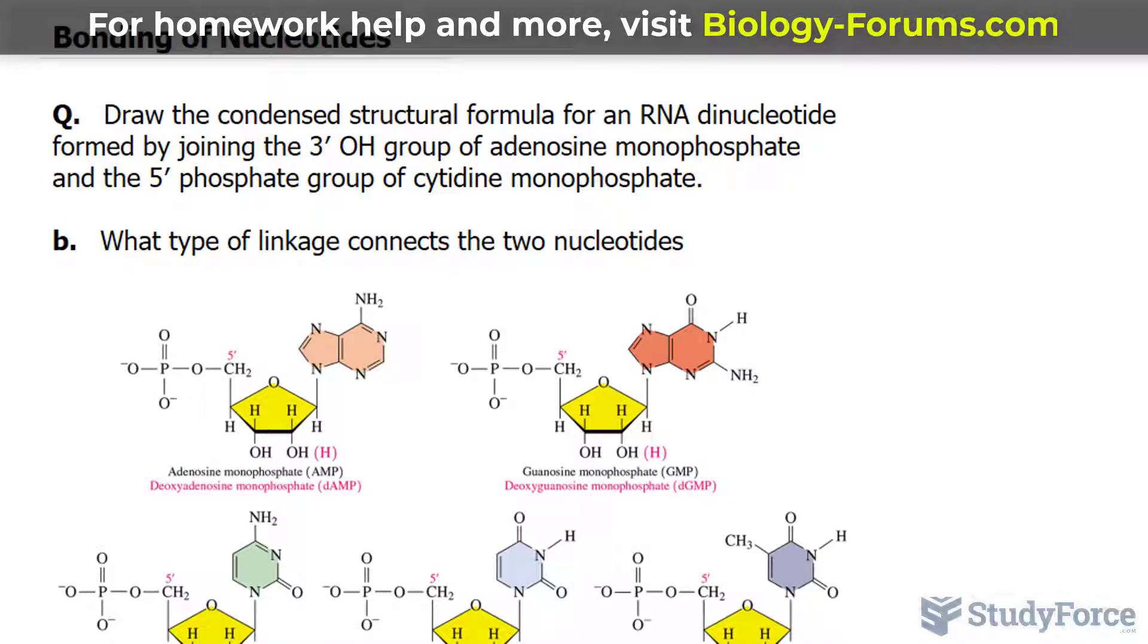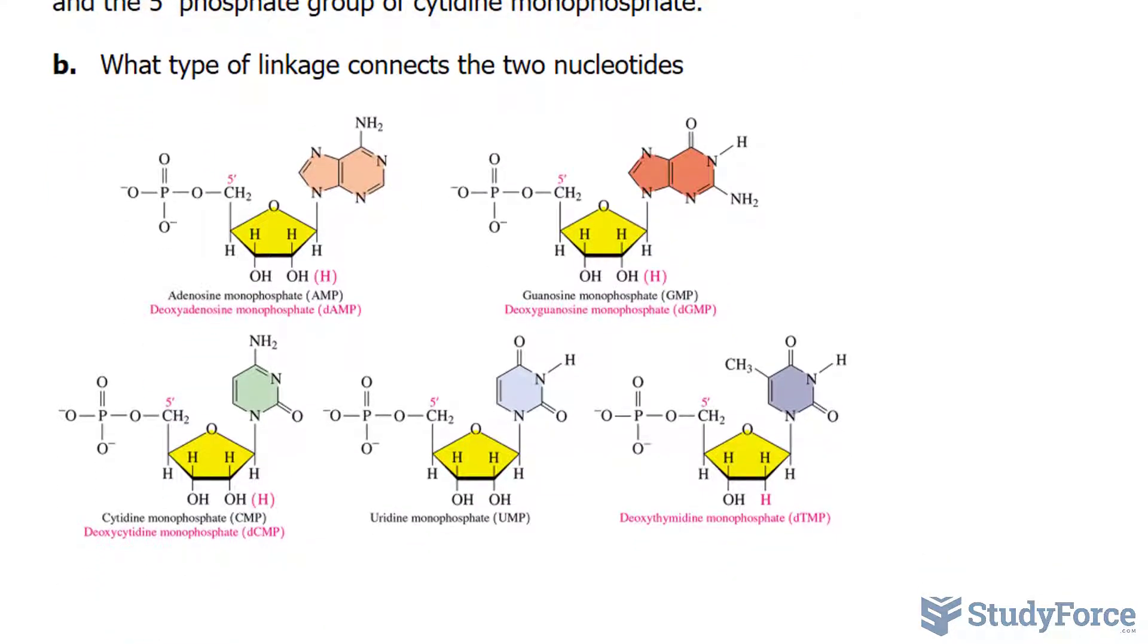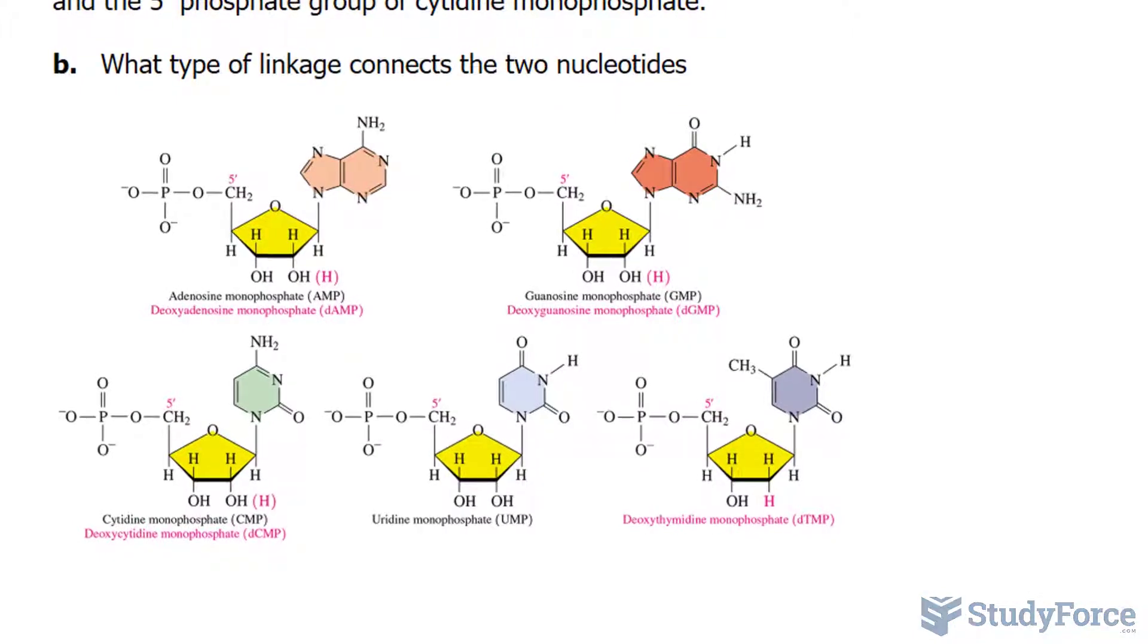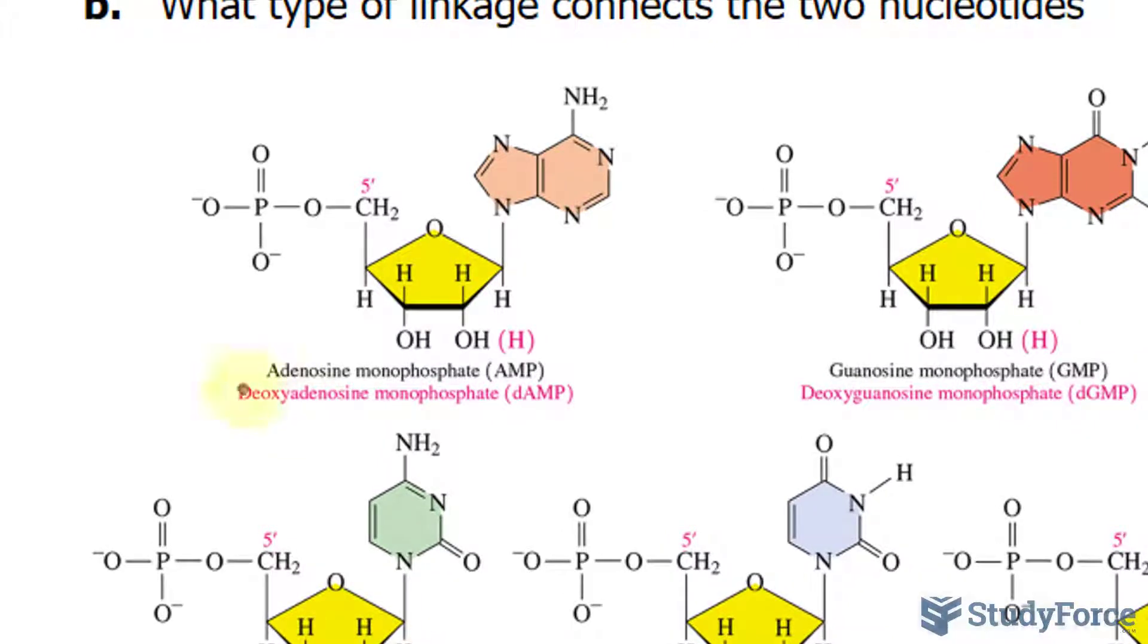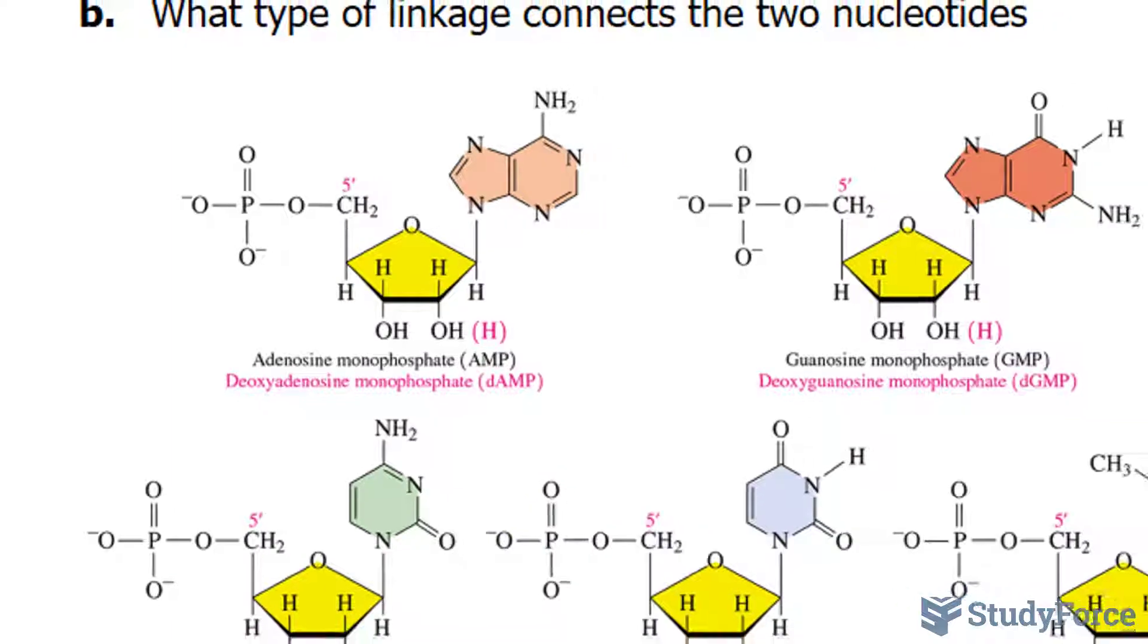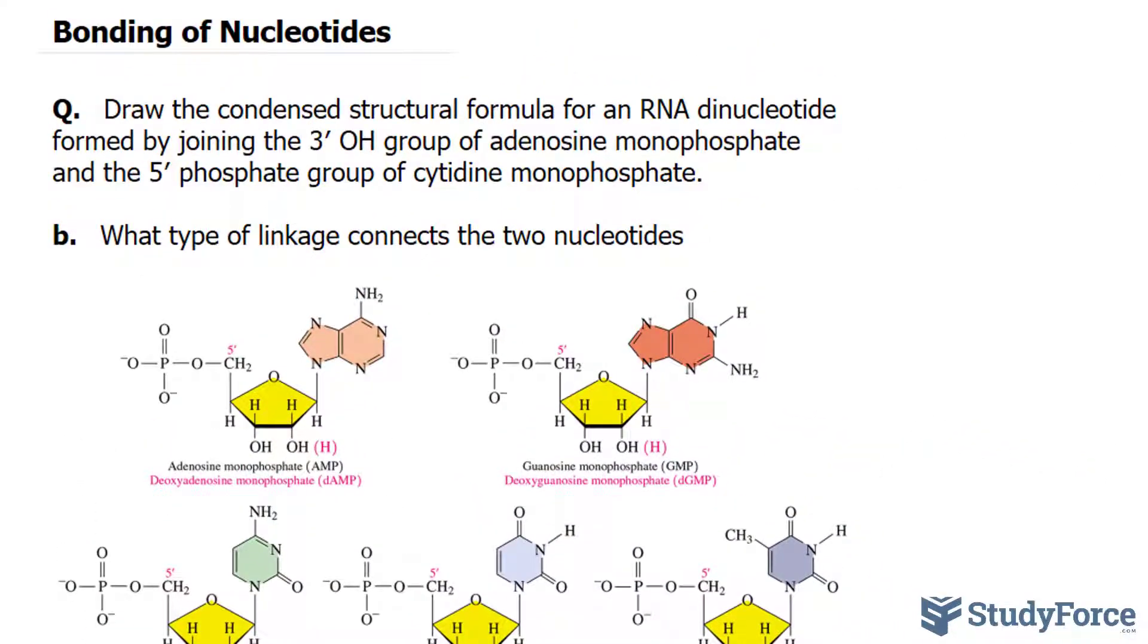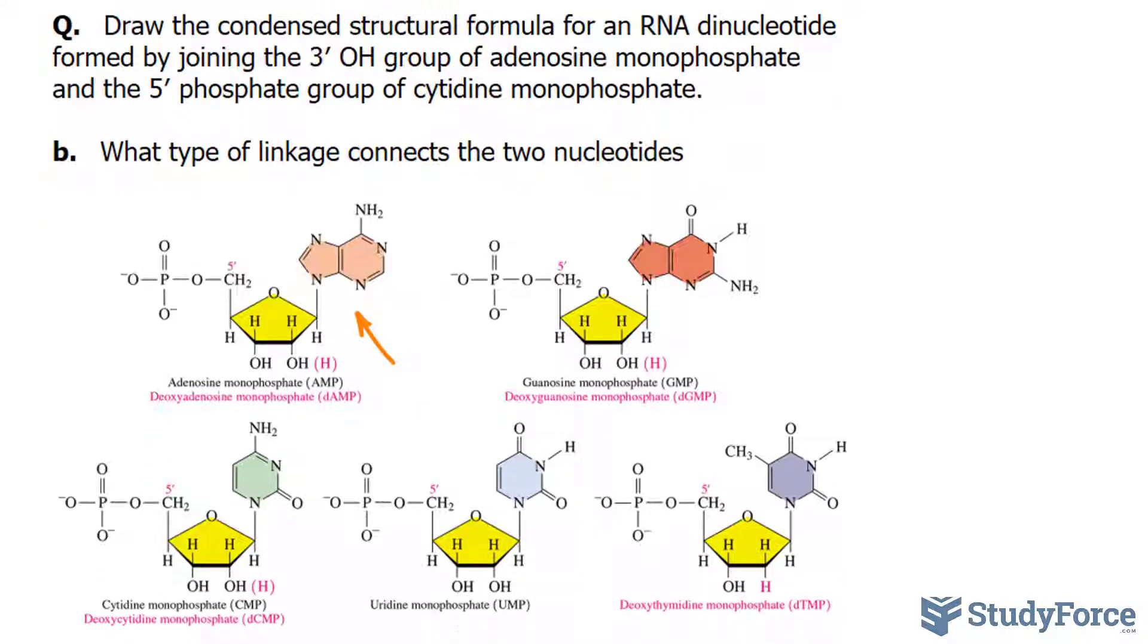We're dealing with an RNA molecule here, and it doesn't hurt to memorize the names of these nucleotides. The names vary slightly for DNA and RNA molecules. The ones that are in pink are for DNA, and the ones that are in black are for RNA. So we're told that this is a dinucleotide consisting of adenosine monophosphate, that's found right here, bonded to cytidine monophosphate, shown here.